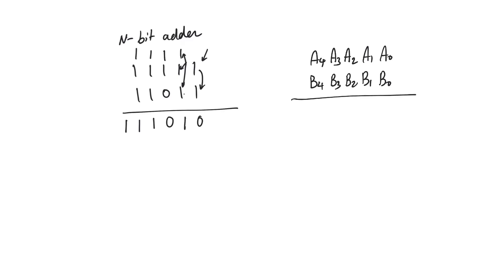And we are going to add the first bit position, A0 plus B0, to produce S0 and a carry-out C0, which is going to be a carry-in to the next bit position, where it's going to be added, producing S1 and carry C1, and so on.